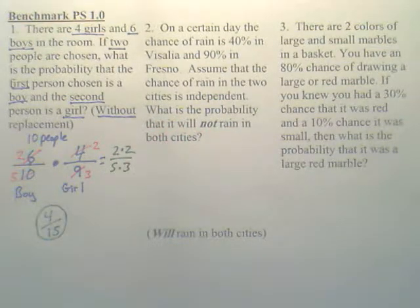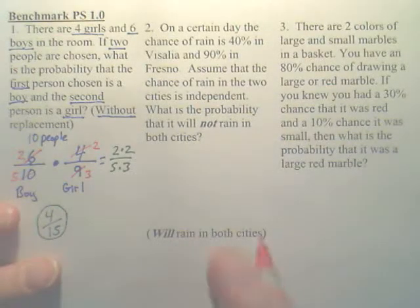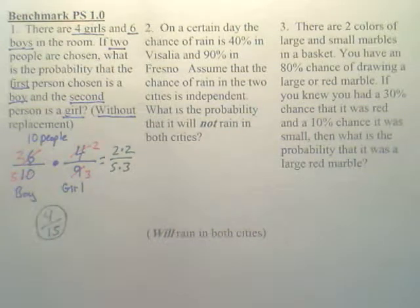What is the probability that it will not rain in both cities? Now, when you hear the word both cities, is that an and or an or? Both cities usually means an and. So it means it's going to not rain in one and the other.